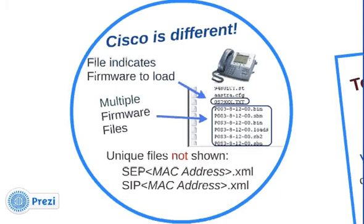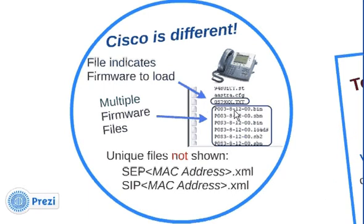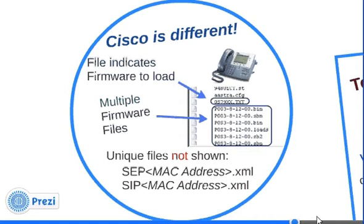Not all phones are the same — Cisco is different. For Cisco's 7900 series phone, when it first connects it looks for a file called OS79XX.txt — capital letters, it's case sensitive, something important to know. That file has one line, something like P003-8-12-00, which tells the phone to go pick up its multiple firmware files. Unlike Aastra's single firmware, Cisco has multiple firmware files including separate bootloader files with extensions like .bin, .sbn, and .loads.